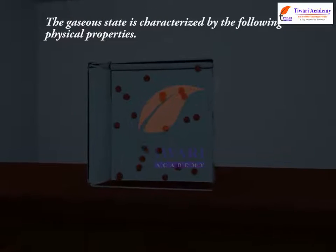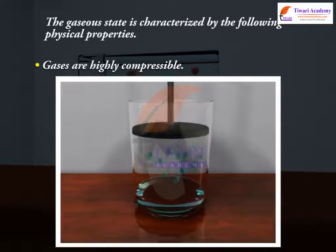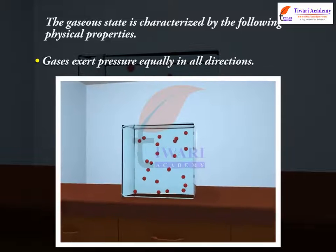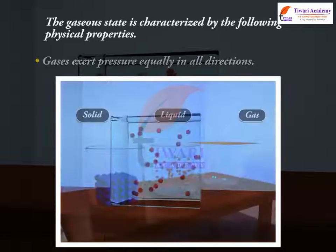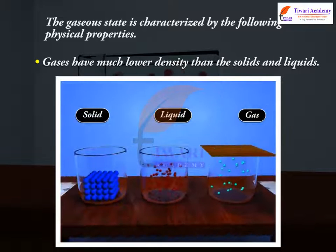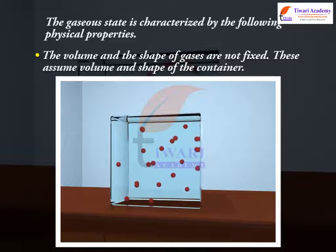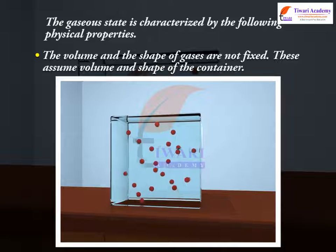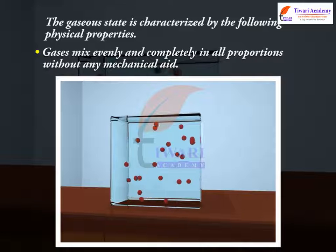The gaseous state is characterized by the following physical properties. Gases are highly compressible. Gases exert pressure equally in all directions. Gases have much lower density than solids and liquids. The volume and the shape of gases are not fixed — they assume the volume and shape of the container. Gases mix evenly and completely in all proportions without any mechanical aid.